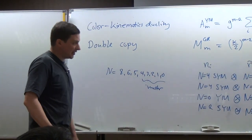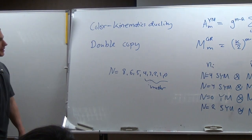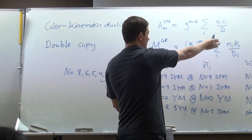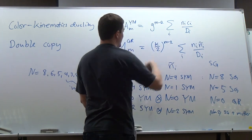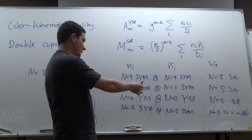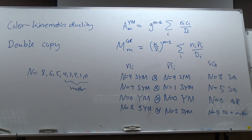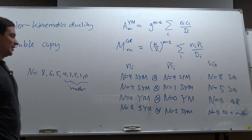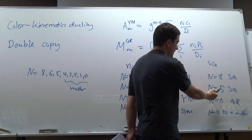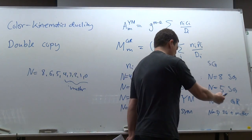But we can actually show that it works at loop level using these formulas — you just have to integrate, the numerators will depend on loop momentum, and you integrate over the loop momentum. We showed explicit examples where it works. For example, all of these theories all the way down to N=0 have been checked at one-loop four-point. Some theories have been checked to higher loops: N=8 supergravity up to four loops, N=5 four loops, N=4 four loops as well. N=3 and below only at one loop.